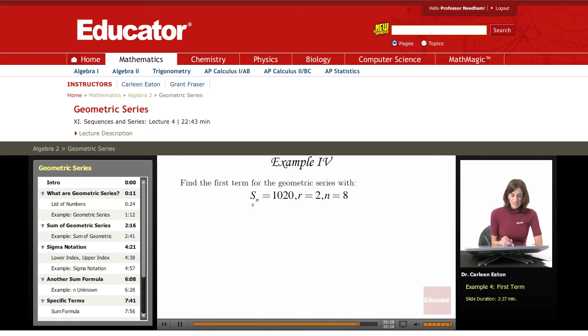So I'm going to look at the information I have. I have the sum, I have the common ratio, and I have the number, but I don't have the last term. So I use the formula that involves the number of terms, not the last term.